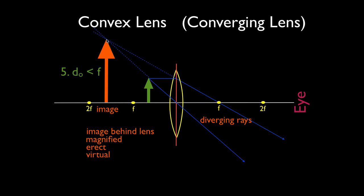The image is behind the lens, on the other side from where the previous images were. When the object is less than F away from the lens, the image will always be behind the lens, always magnified or bigger, and always right-side up — it switches from inverted to erect. This is called a virtual image, created by diverging light rays. This is exactly what a magnifying glass does: you bring the lens very close to the page and the image appears right-side up and magnified.